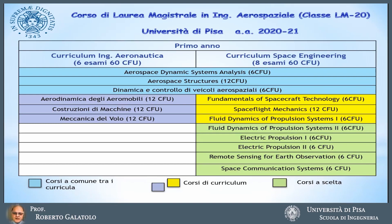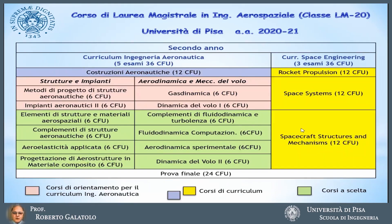The aeronautical curriculum has its elective exams concentrated in the second year, where there is a complete separation of subjects between the aeronautical and space curricula. In particular, the aeronautical curriculum is divided into two orientations: one related to structures and systems, and the other to aerodynamics and flight mechanics. Both orientations have specific required courses and elective exams, of which students must take enough to complete the 12 credits dedicated to chosen exams.